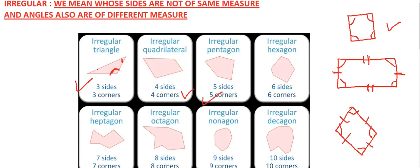For five corners, we name it a pentagon. A five-sided figure is called a pentagon. Look at the angles: this is obtuse, this is acute, this is obtuse, this is acute, and this is again obtuse. So all the angles are of different measures, making it an irregular pentagon.